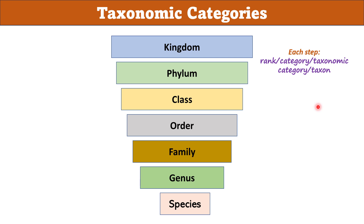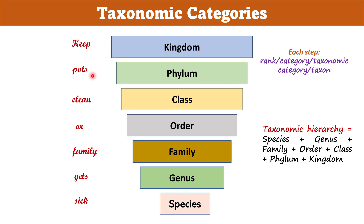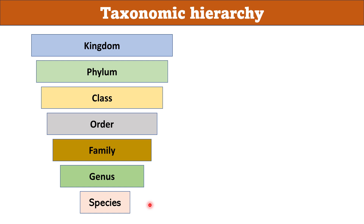Taxonomic hierarchy is the sum of species, genus, family, order, class, phylum, and kingdom. You can remember a funny statement: 'Keep Pots Clean Or Family Get Sick' — K for kingdom, P for phylum, C for class, O for order, F for family, G for genus, and S for species.